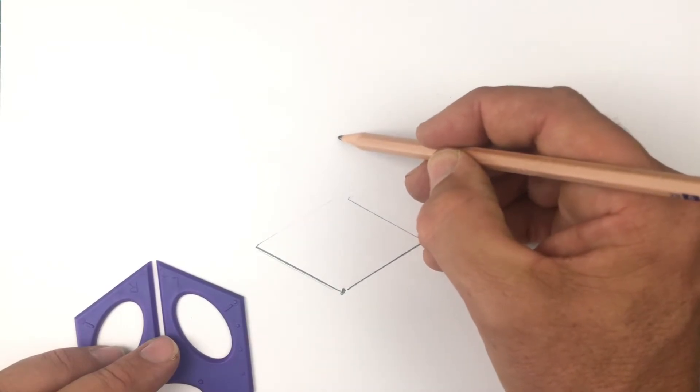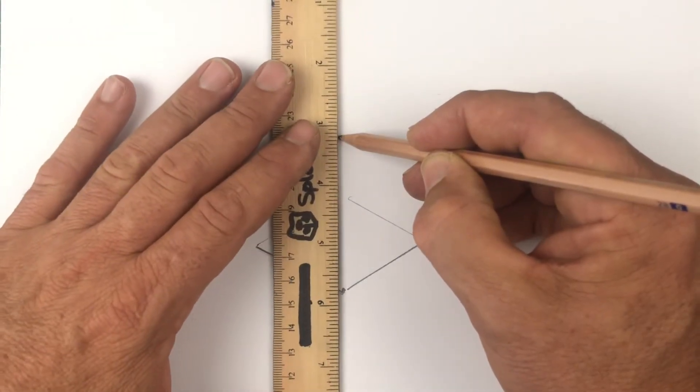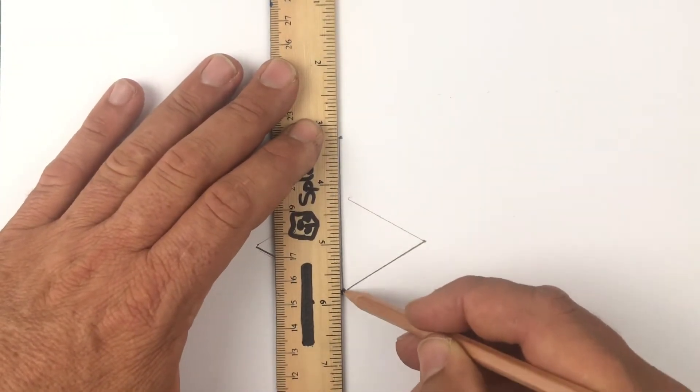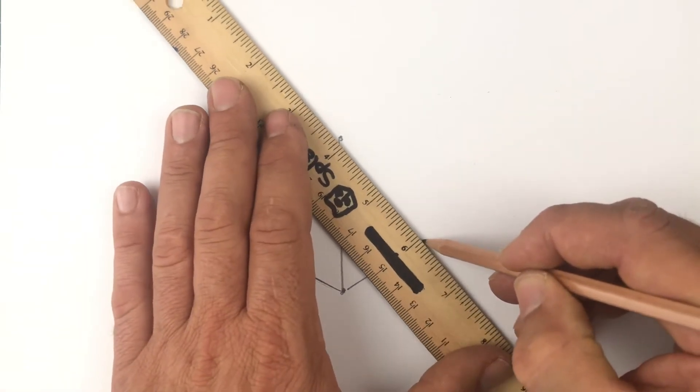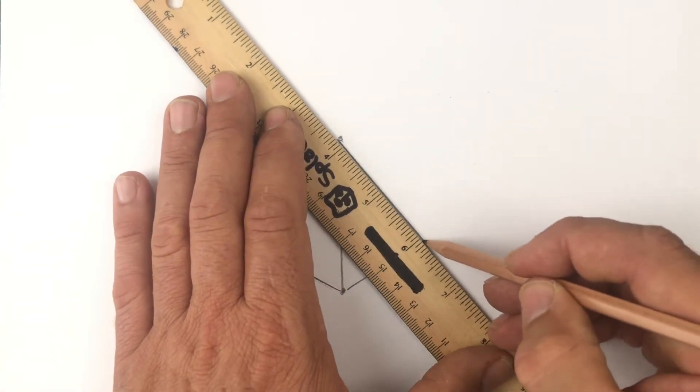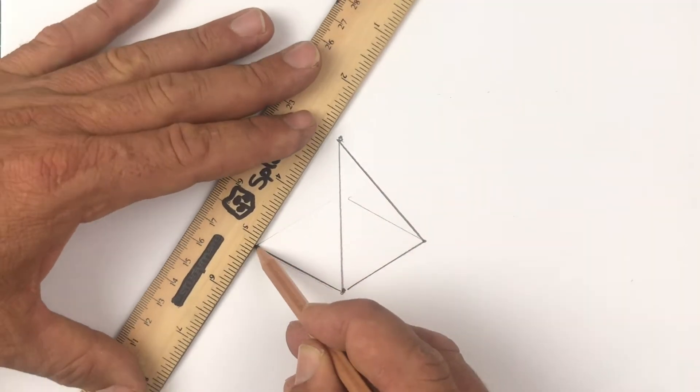Next, pick where you'd like your apex to be. I'm using a ruler to reach the apex on this very high pyramid, so join the apex to each of the corners or vertices until you have a solid object.